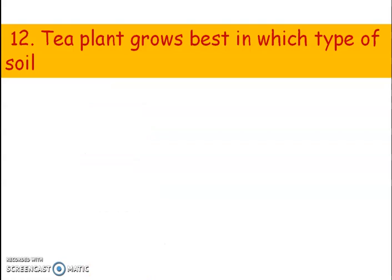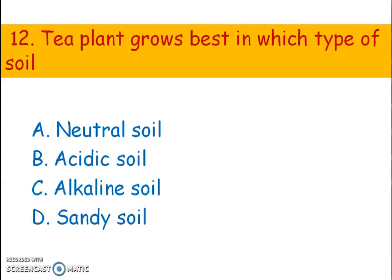Next question. Tea plant grows best in which type of soil? Options: A) Neutral soil, B) Acidic soil, C) Alkaline soil, D) Sandy soil. The right answer is option B, acidic soil. Acidic soil has a pH less than 7. Tea plant grows best in the pH range of 4.5 to 5.5.